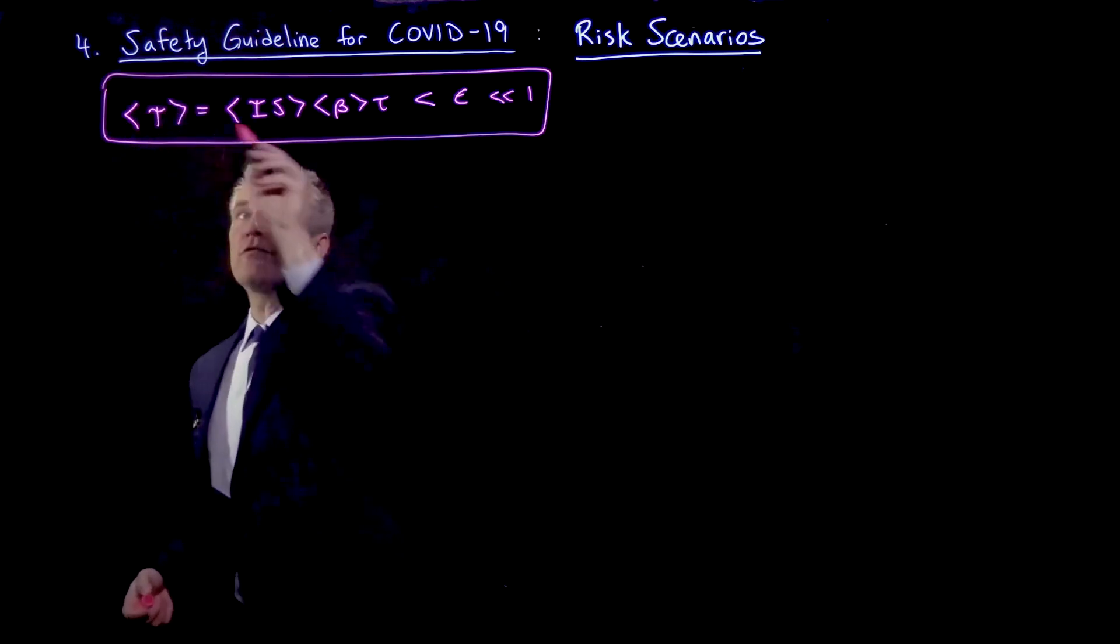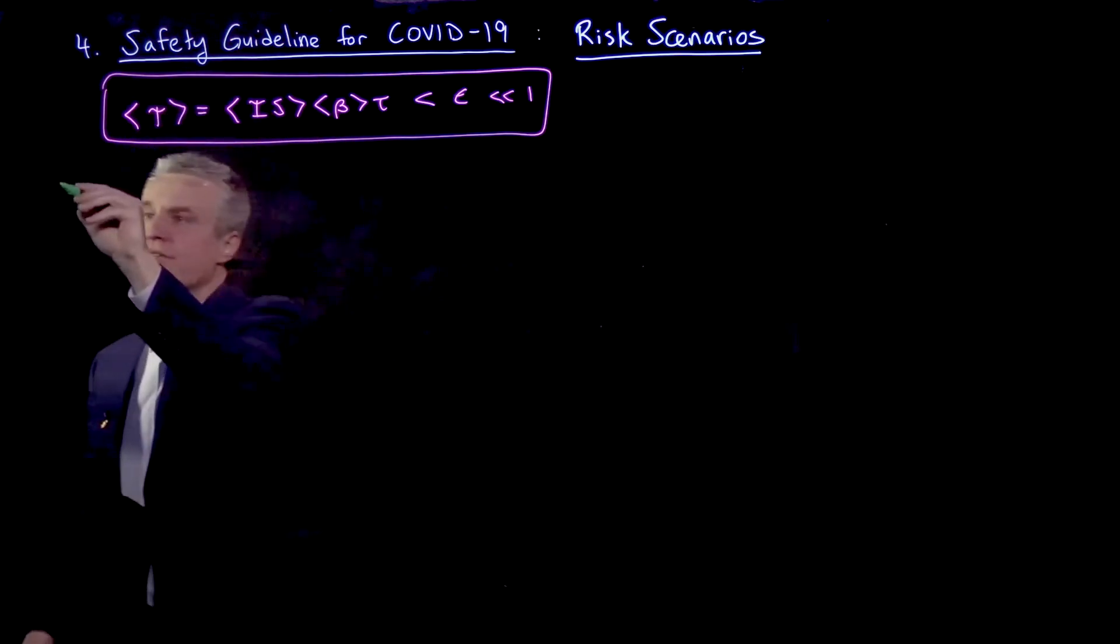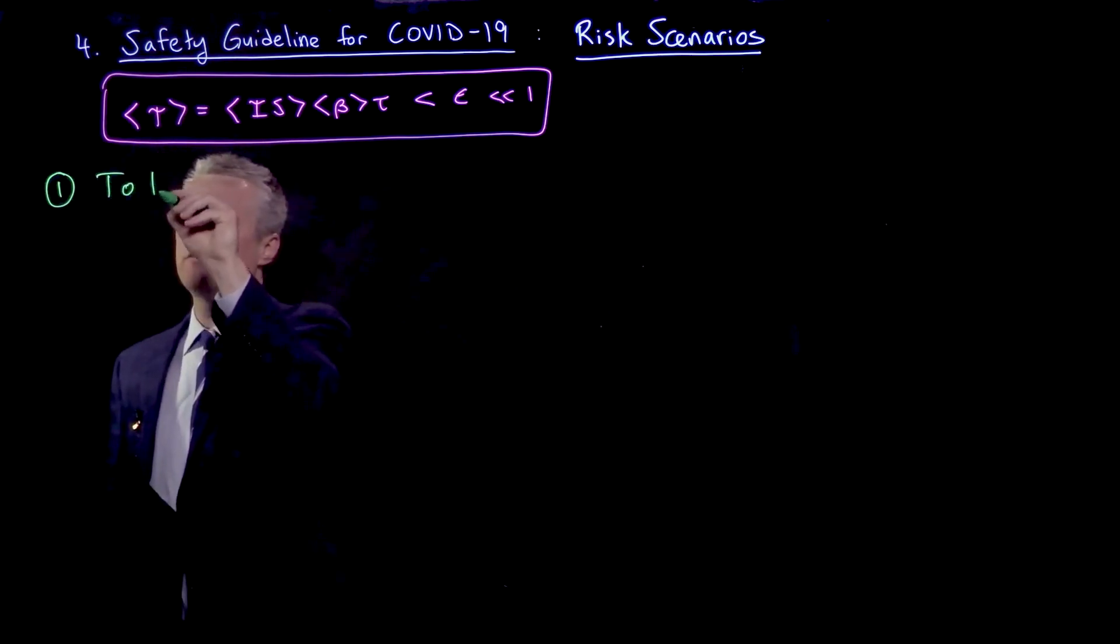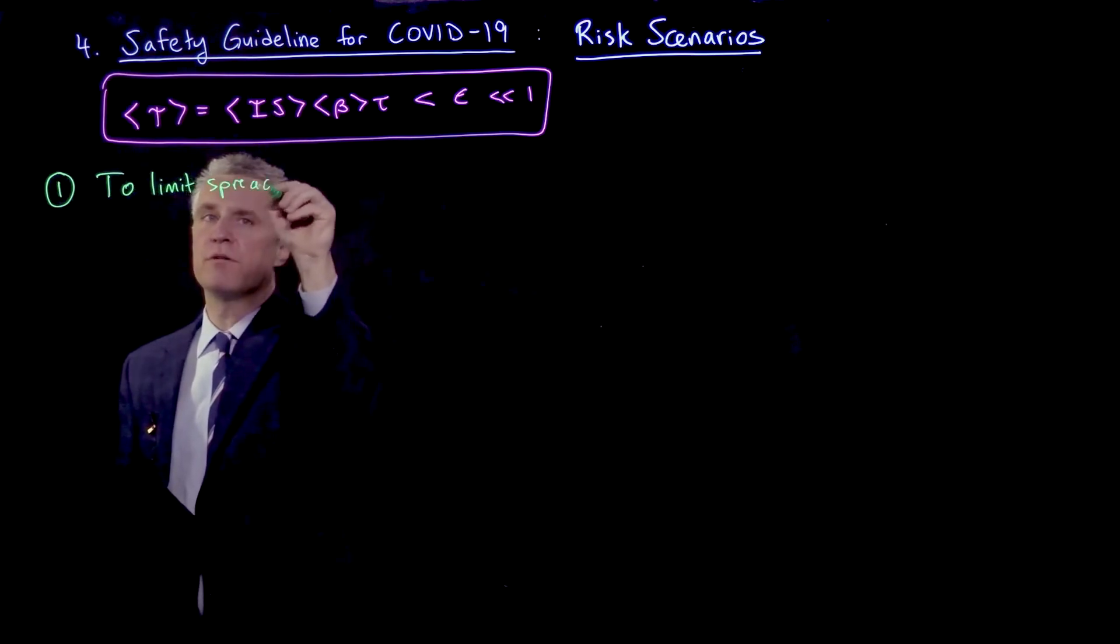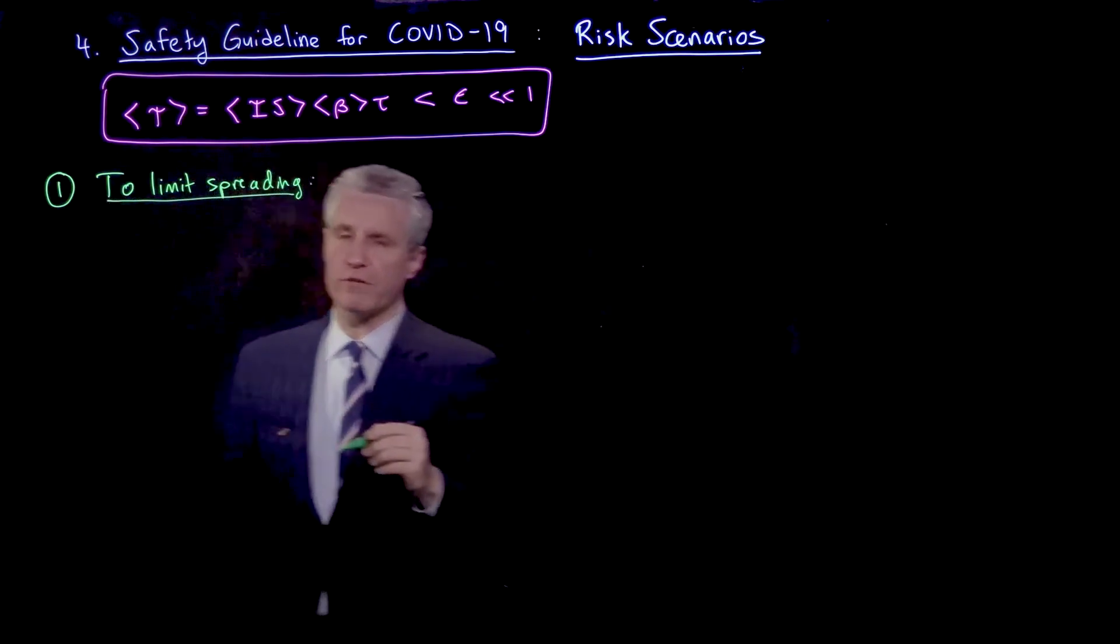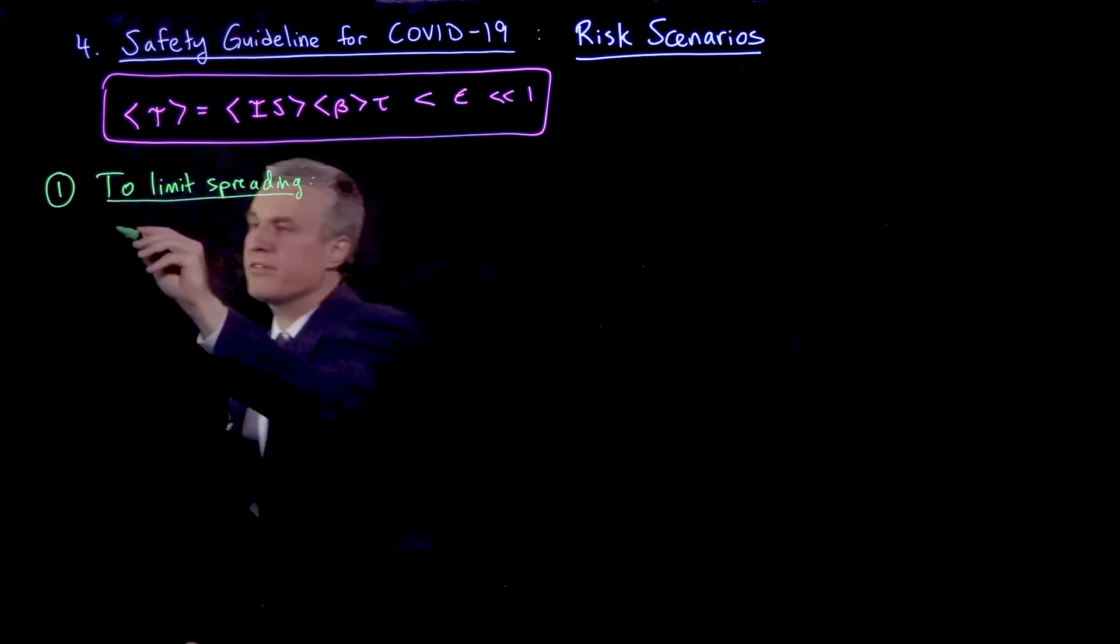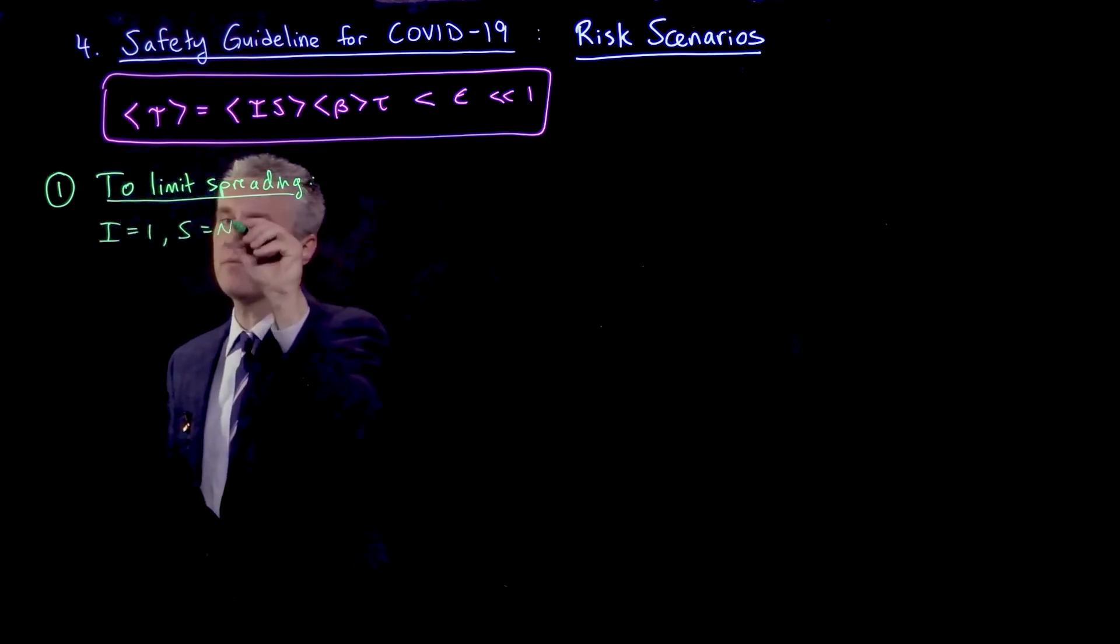The different scenarios correspond to our different assumptions about I and S. First, I'll just remind you of what we've been doing until now, which is to limit spreading of the epidemic as a whole, thinking what if every indoor space were to impose the guideline. We're really thinking of the case where I is 1 and S is N minus 1.